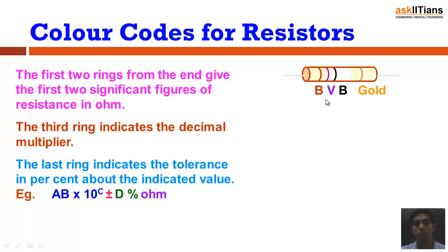Right now we have a resistance which is brown, this is brown, this is violet, this is black, and this is gold. So according to a particular chart, this resistance comes out to be 17 plus-minus 5% ohm. So this is the tolerance value. This is the actual value of resistance, 17 ohm.